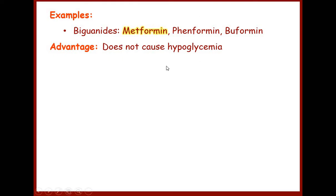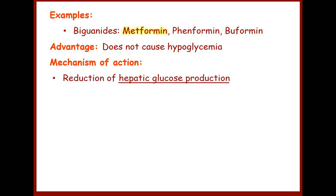Now let us discuss the mechanism of action. These drugs are basically activators of AMP-activated protein kinase (AMPK). The most important pharmacological action is the reduction of hepatic glucose production. This is a major issue in type 2 diabetes — even after eating food, blood sugar levels may rise, and even in fasting conditions there is hyperglycemia. The reason is the pathway in the liver that leads to gluconeogenesis.